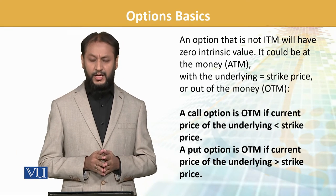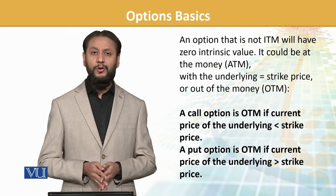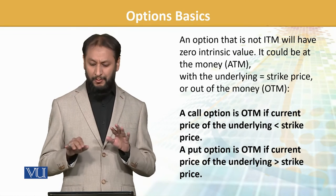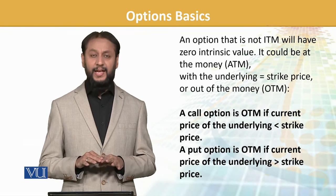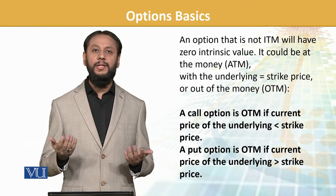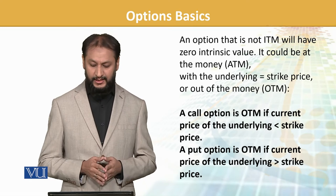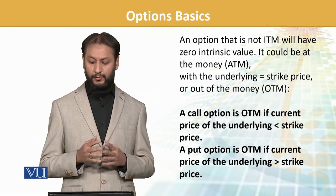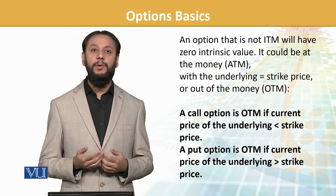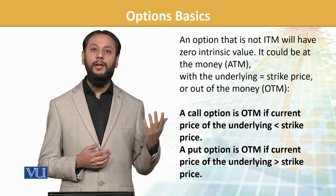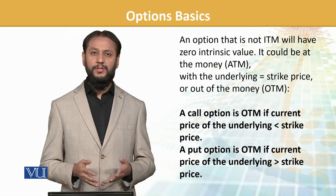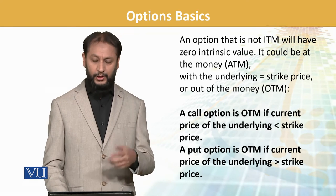A call option is out of the money when the underlying price is less than the strike price — which is the case we just discussed. A put option is out of the money if the current spot price is greater than the strike price, because if the market price is higher, your right to sell at a lower price is not useful. This is the same example we just discussed, now tabulated for you.